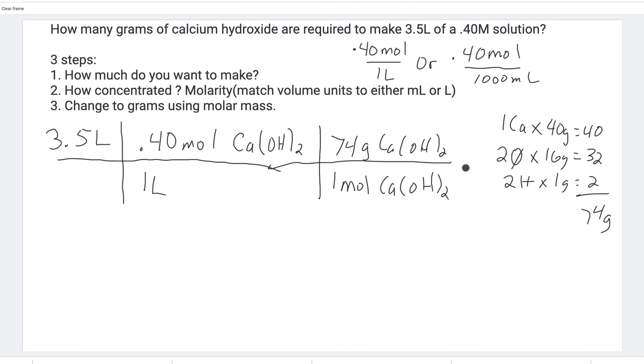Then we take the calculator and do the button pushing. We take 3.5 times 0.4 times 74, and that equals around 103.6 grams of calcium hydroxide.